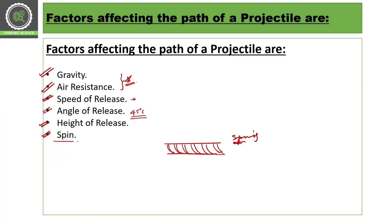And it is the same way that spin also plays an important role in the path — which is the trajectory — when the bullet is fired toward the target.